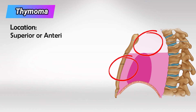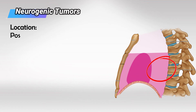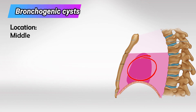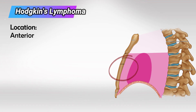Thymoma usually occurs superiorly or anteriorly. So if an X-ray shows a mass in the anterior mediastinum, it's very likely to be thymoma. In the posterior mediastinum, we have neurogenic tumors. In the middle, we have the most benign bronchogenic cysts. In the anterior, we also have Hodgkin lymphoma.